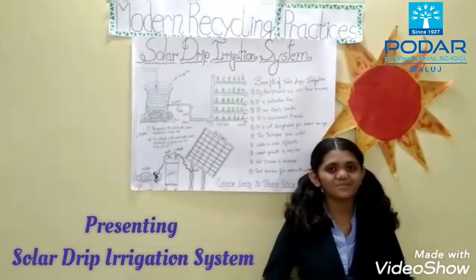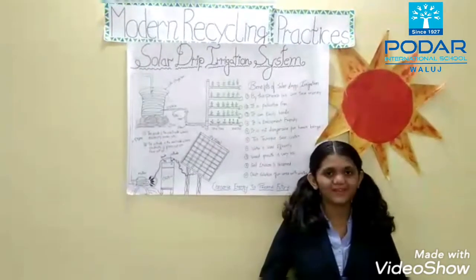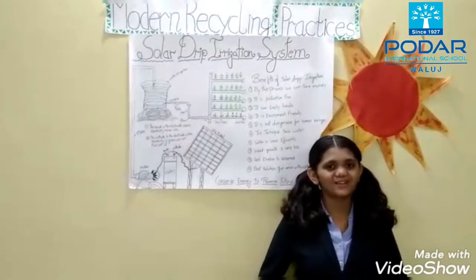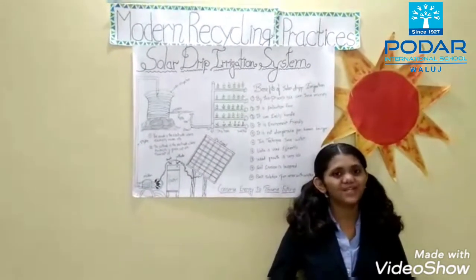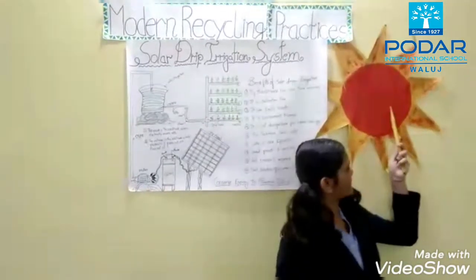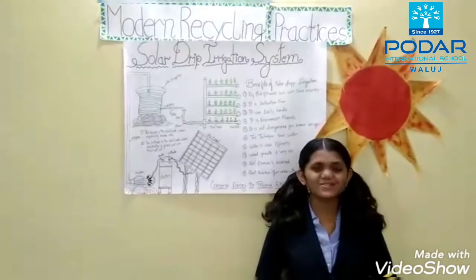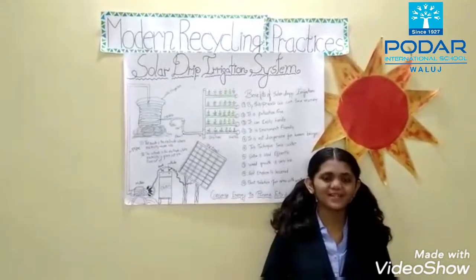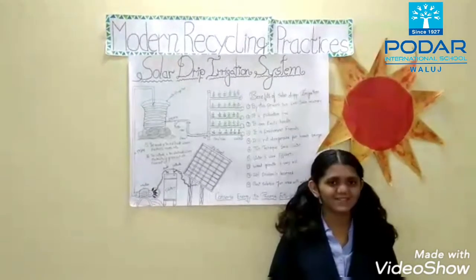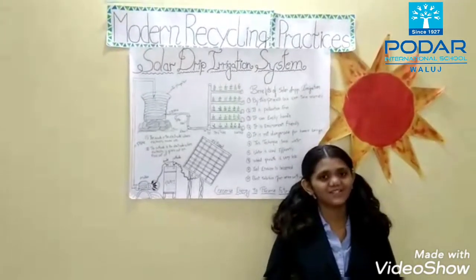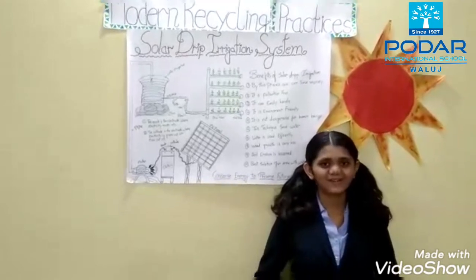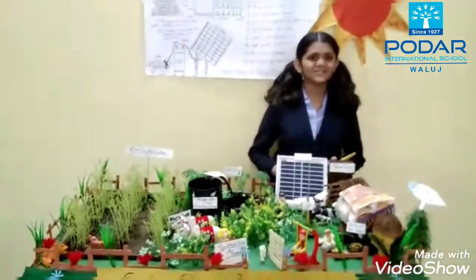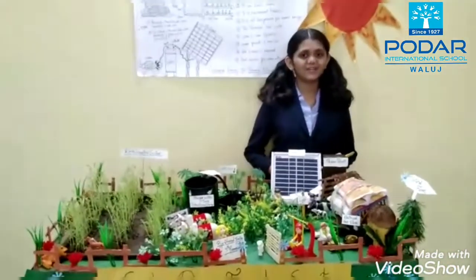Energy is the most important part of life. There are many types of energy converted from one form to another, but the main source of energy is sunlight. Sunlight energy is also converted into so many types, such as energy by the process of photosynthesis, sunlight energy converted into heat energy, etc. Today, I will show you how light energy is used for Solar Drip Irrigation System.